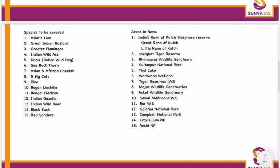With respect to species, for this year we need to cover the Asiatic lion, Great Indian Bustard, Greater Flamingos, Indian Wild Ass, Indian Wild Dog (also called Dhole), Sea Buckthorn, and the Asian and African Cheetah difference — especially their areas and where they are found.